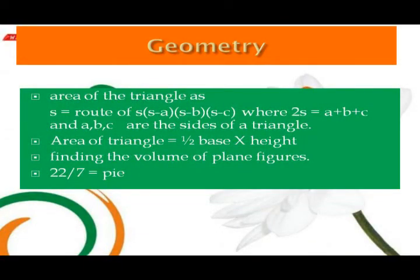Geometry: He gave the area of a triangle as S = √(s(s−a)(s−b)(s−c)), where 2s = a + b + c, and a, b, c are the sides of the triangle. He also gave the formula for finding the area of a triangle in terms of base and height: Area = (1/2) × base × height. He also worked on finding the volume of plane figures. He gave 22/7 as the value of pi and 3 as a practical value.